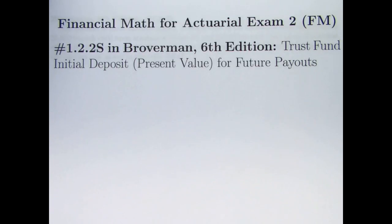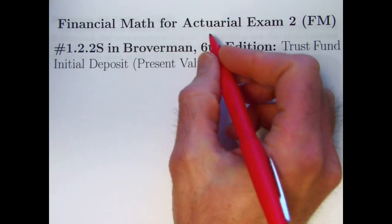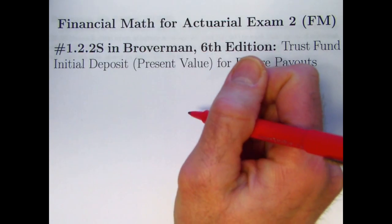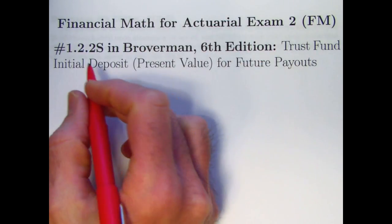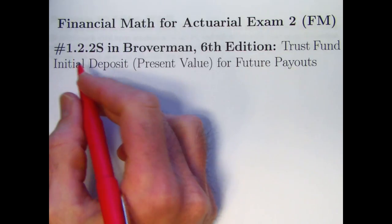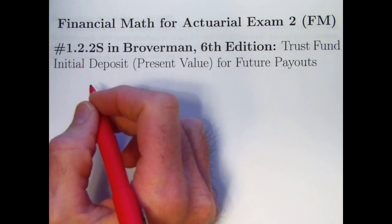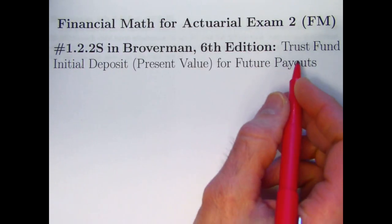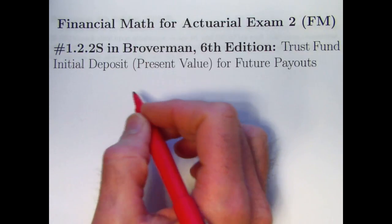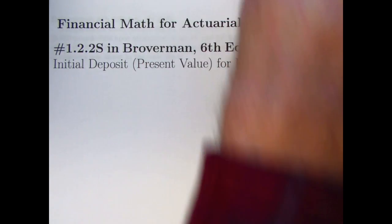Hi, this is my third video in helping people study for actuarial exam 2, also called the financial math. In this video we're going to be looking at solving exercise 1.2.2S in Broverman the 6th edition, trust fund initial deposit or present value for some future payouts to your children.